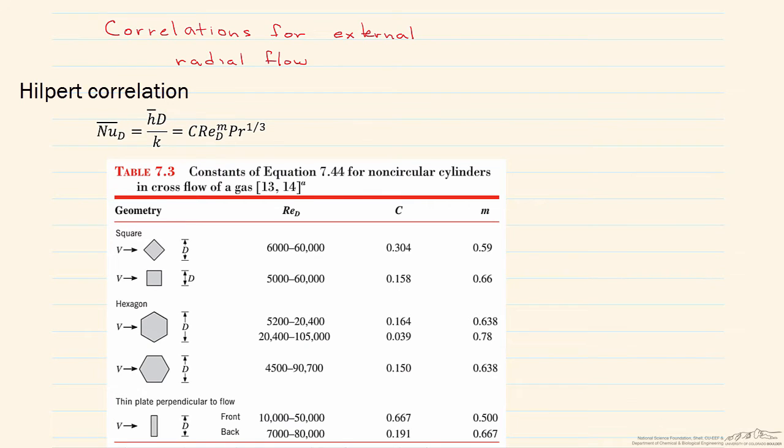In this screencast, we're going to look at three different correlations for cylinders in cross flow, as well as one for a sphere in cross flow, and we're going to discuss the advantages and disadvantages of each one.